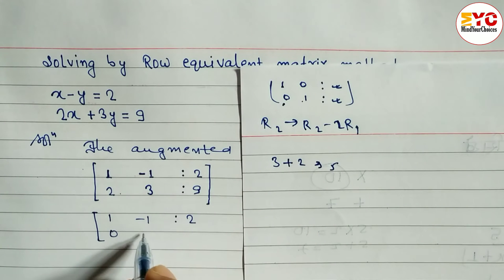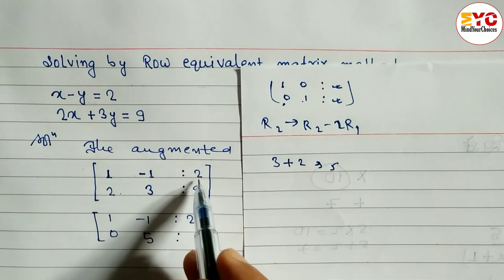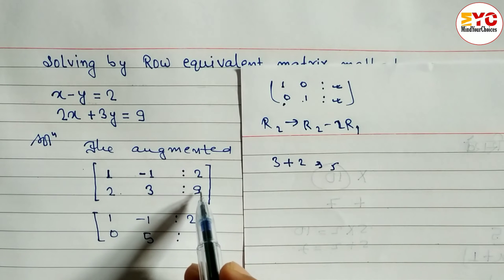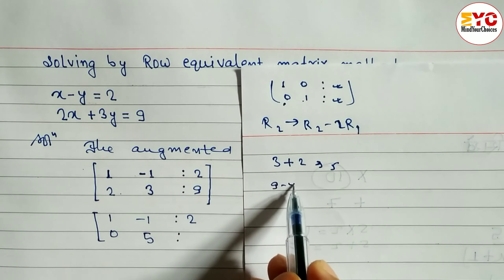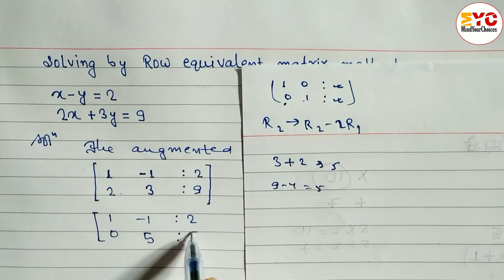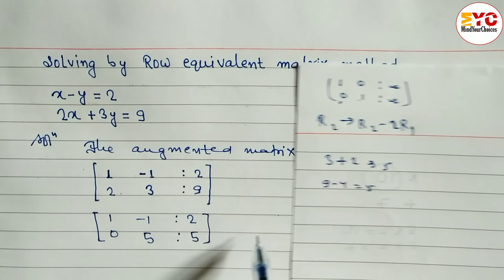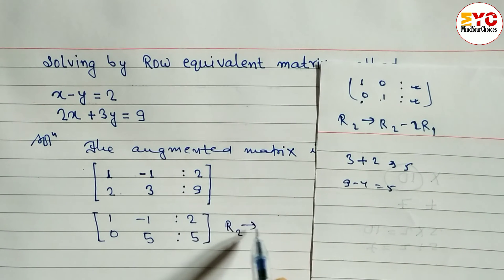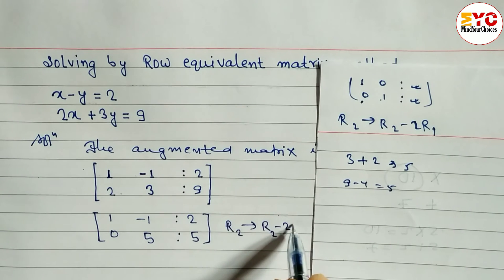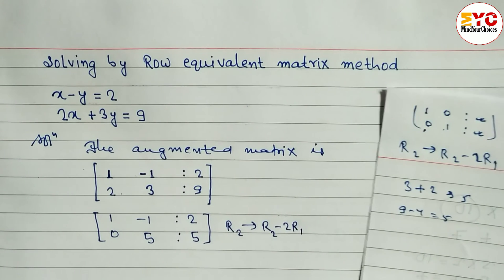So it will be 5. So what we can write here? We have to write here 5. Similarly we have to multiply by 2, 2 to the 4. And we have to subtract. 9 minus 4 is equal to 5. So we have to write here 5. Hope you understand this one. And here reason we have to write. R2 tends to R2 minus 2 R1.